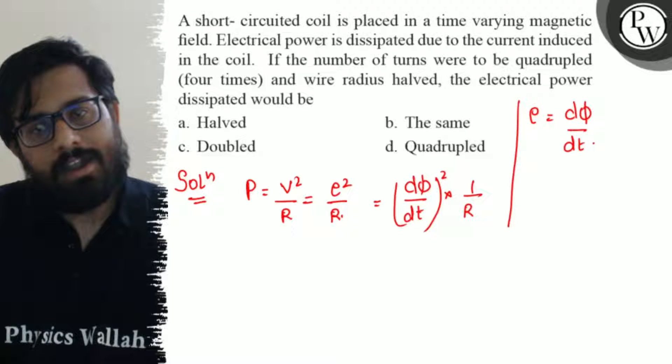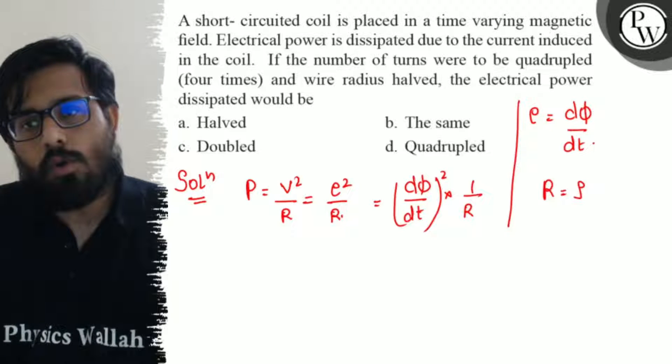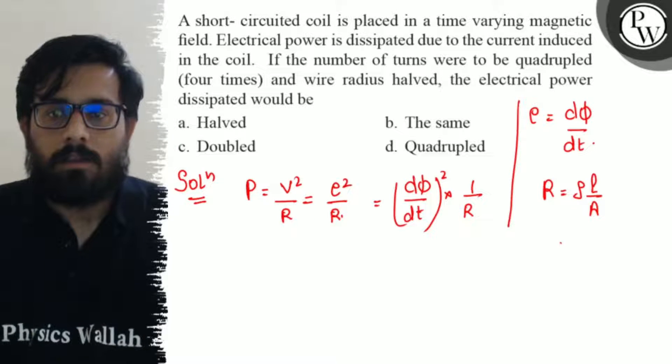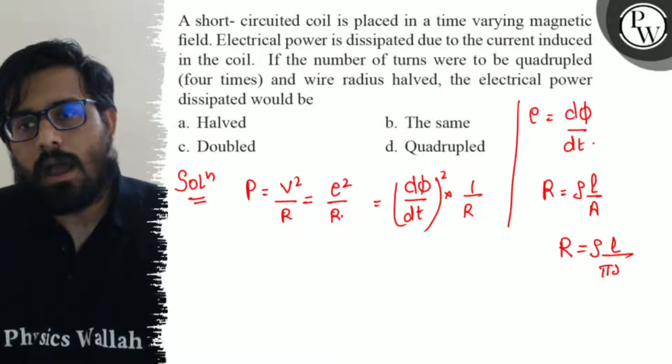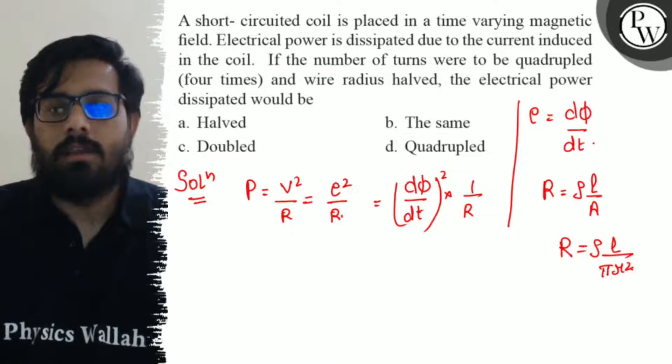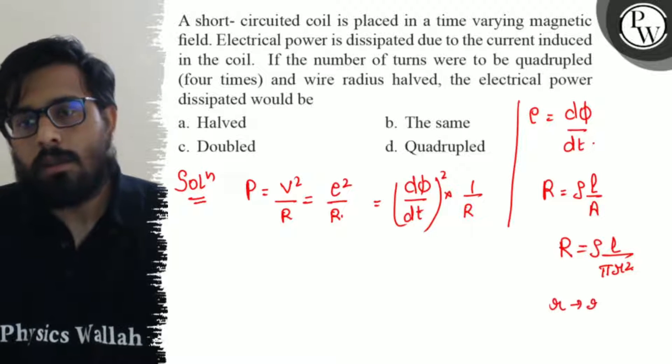Now R is the resistance and resistance can be written as ρL by area. So the resistance can be written as ρL upon πr², where small r is the radius.